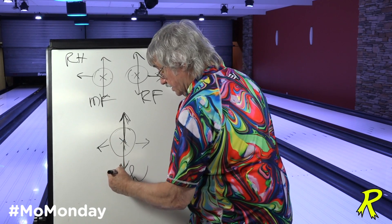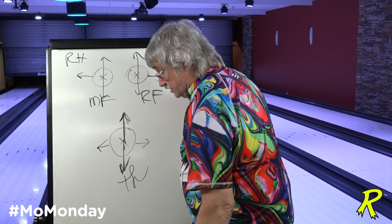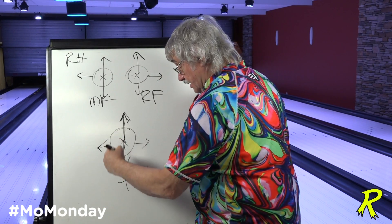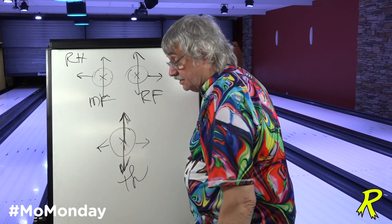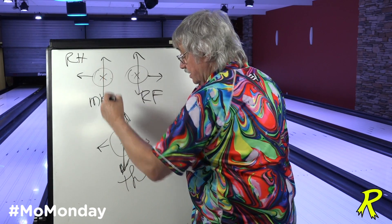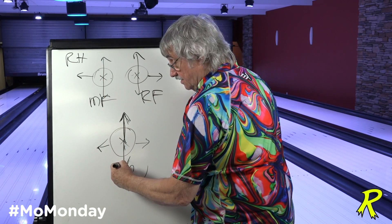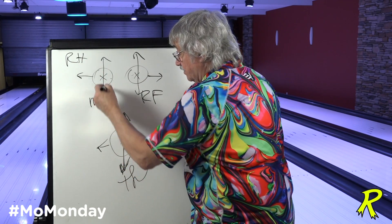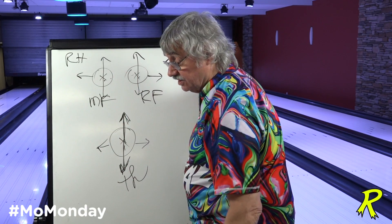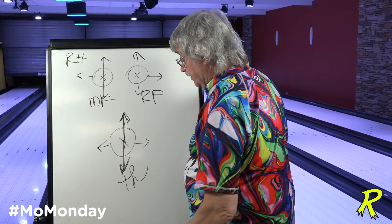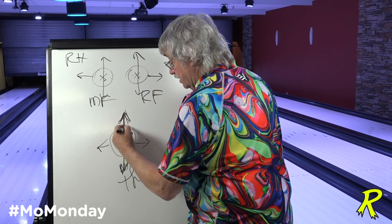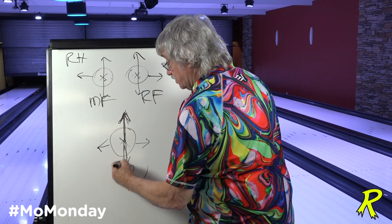If you increase the reverse in the thumb, the thumb comes out earlier and you decrease the effectiveness of the thumb, therefore you're increasing the effectiveness of the fingers. So we can go this way or this way.